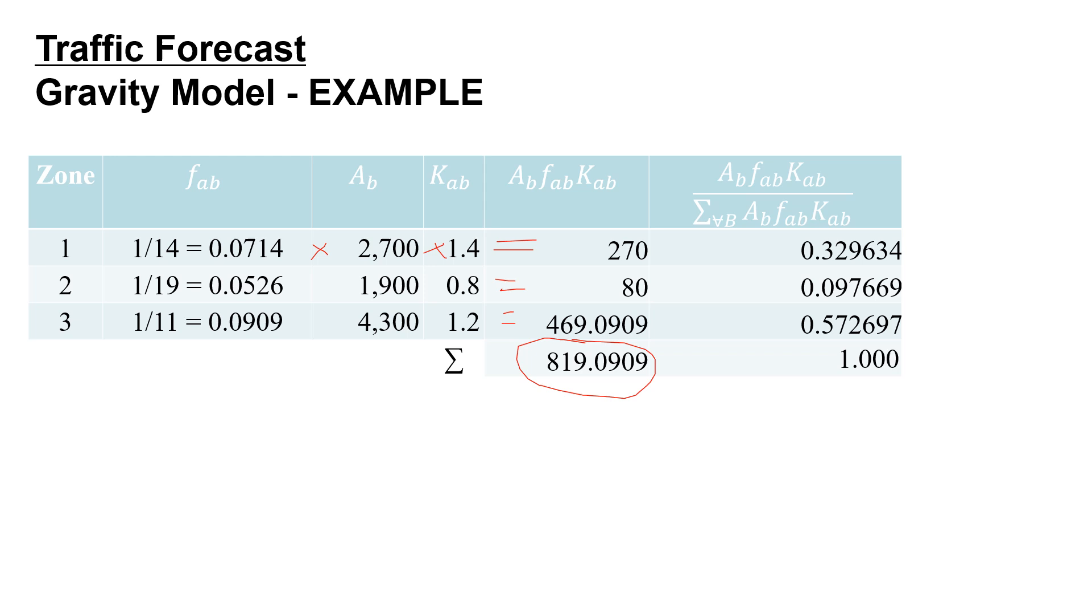So we're going to take 270 divided by 819.09, 80 divided by the same, and 469 divided by the same. This gives us the proportion that we're going to use to distribute the traffic.